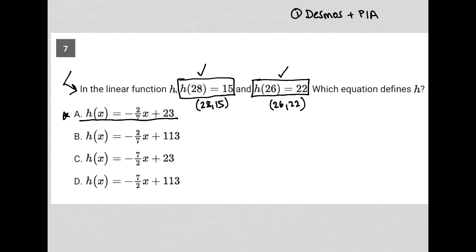What I'm going to show you is how to do it mathematically. So mathematically, I'd pay attention to the form, the structure of the answer choices, and I notice that they're all in slope-intercept form. So it's like an h of x equals mx plus b form, which means I want to solve for m, and I want to solve for b.